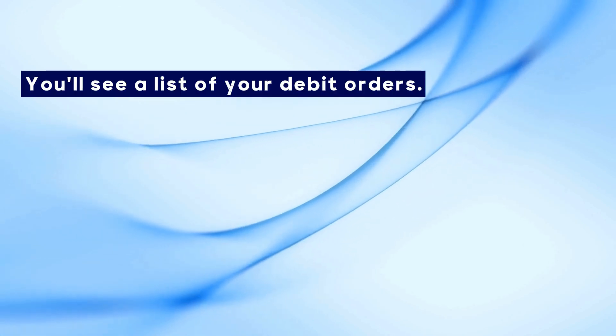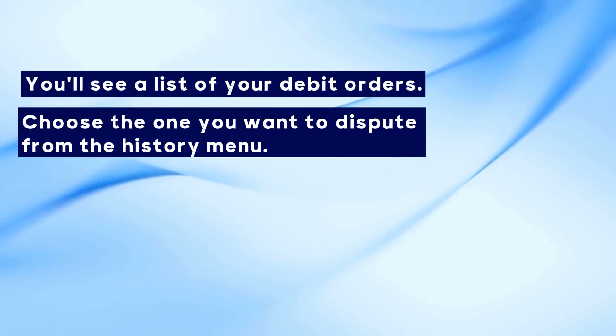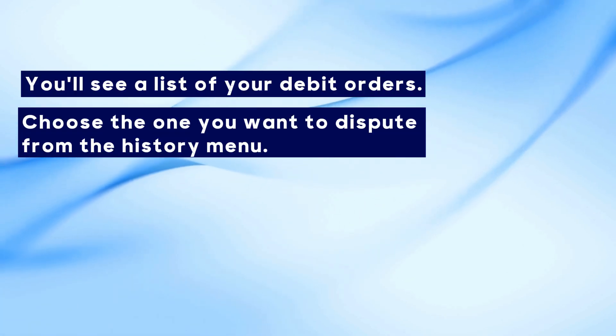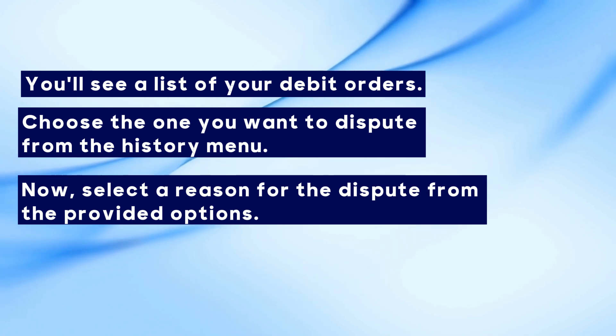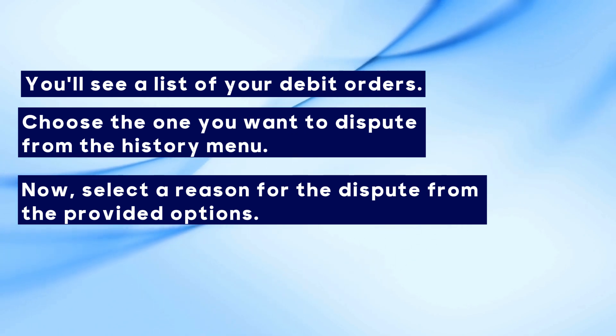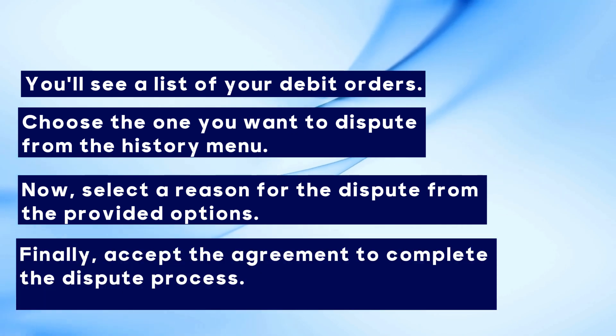You'll see a list of your debit orders. Choose the one you want to dispute from the History menu. Now, select a reason for the dispute from the provided options. Finally, accept the agreement to complete the dispute process.